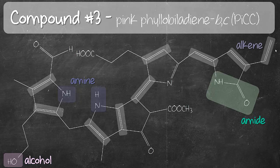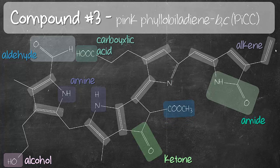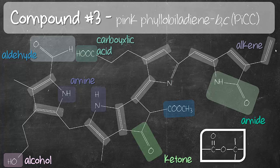Move back to the left of the compound again — let's look at the top. What do you see? C double bond O, H. So that's an aldehyde. And right next to it, we have COOH — that's a carboxylic acid. Moving down to the center of the compound, we have C double bond O and to the left and right of it are carbons — so that is a ketone. And the last one we have is COOCH3. If you were to draw it out, it would be C double bond O, next to it is an oxygen, and next to that oxygen is a carbon with three hydrogens. So that is an example of an ester.